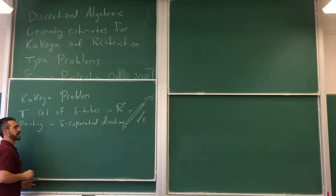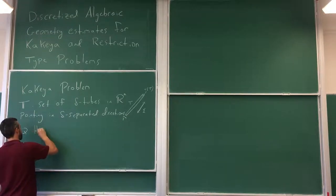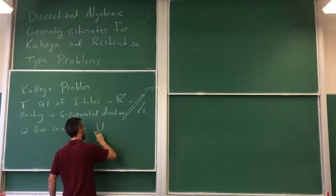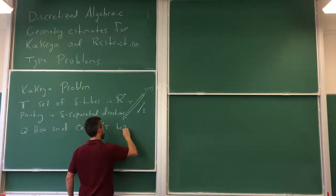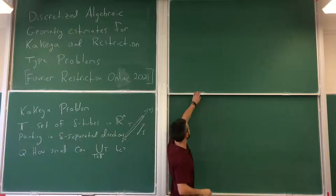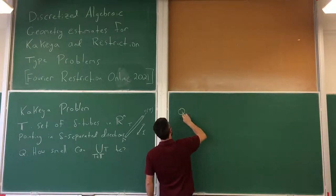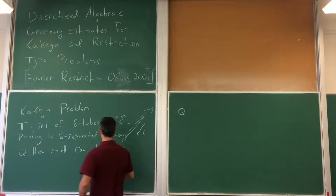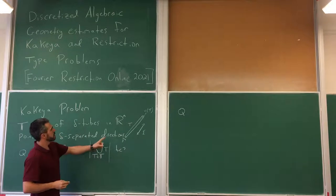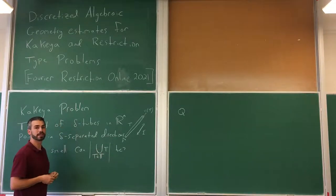There are many questions we can ask, but two of them in particular stand out. First: how small can the union of these tubes be? The Lebesgue measure of this union — intuitively, if these tubes point in different directions, they can't overlap very much on average, so their union, conjecturally, has a large volume.